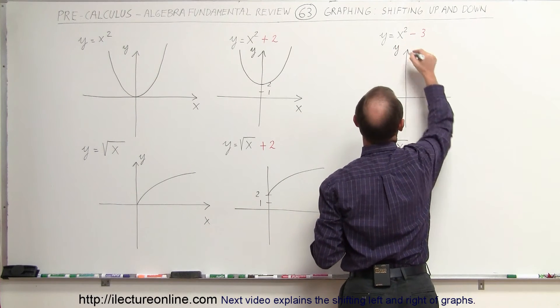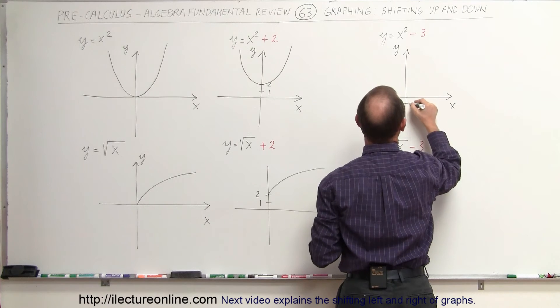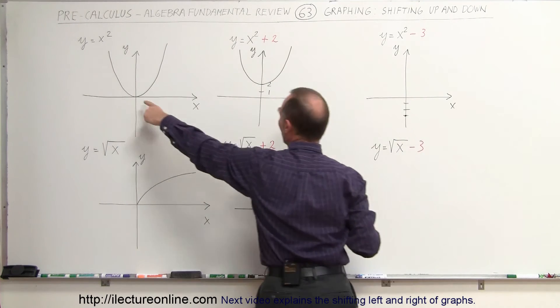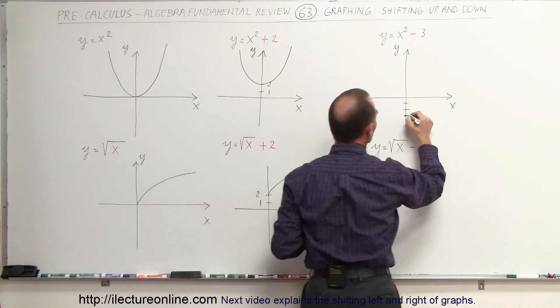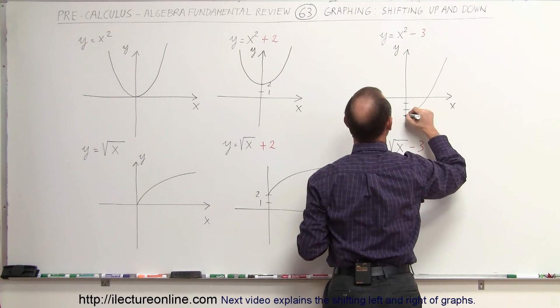So here's your y-axis, there's your x-axis, so 1, 2, 3. That means the vertex, the lowest point on the parabola, now has dropped 3 units, and now the graph will look like this.